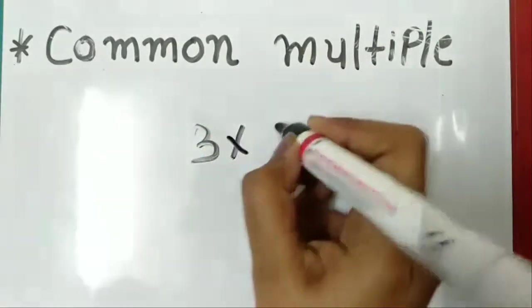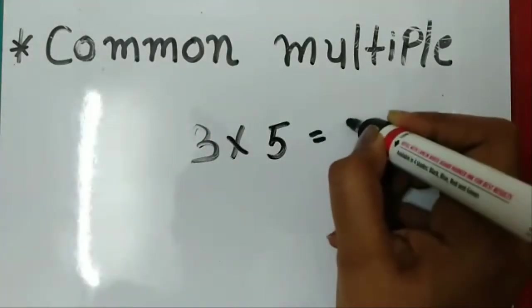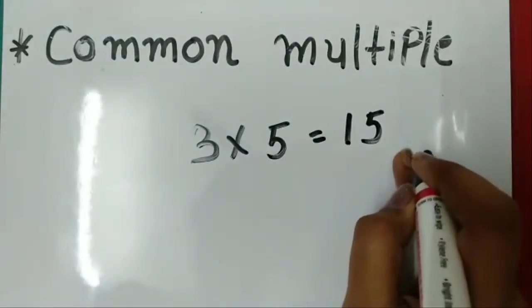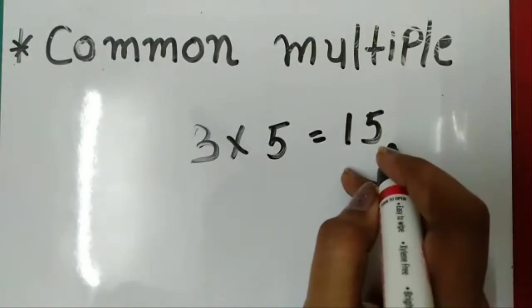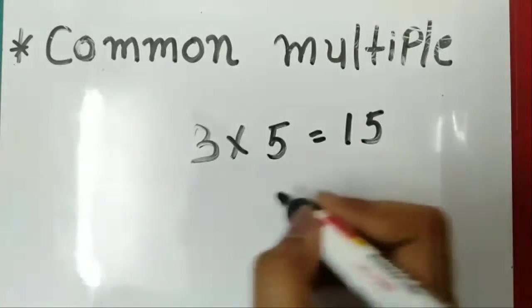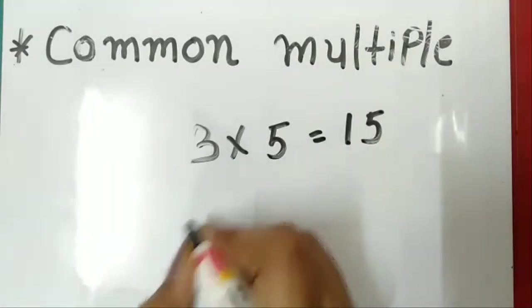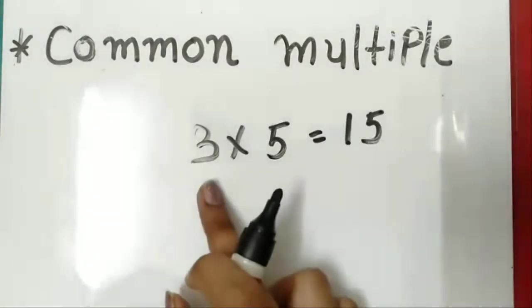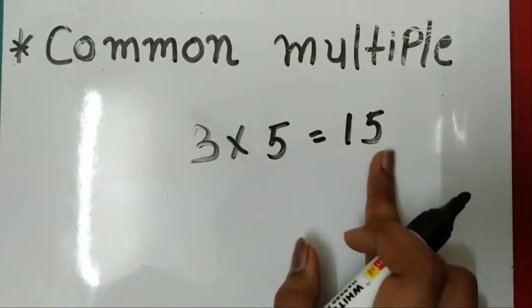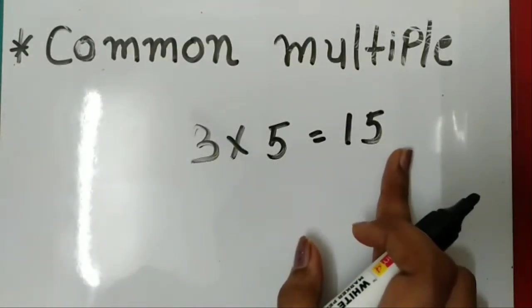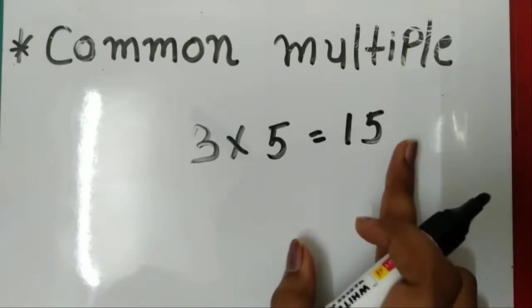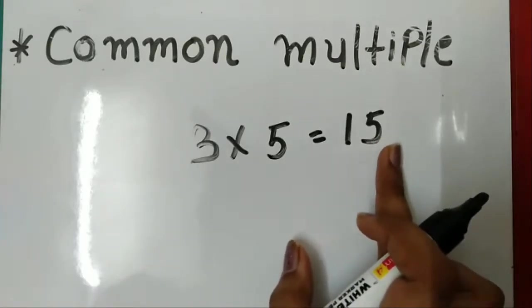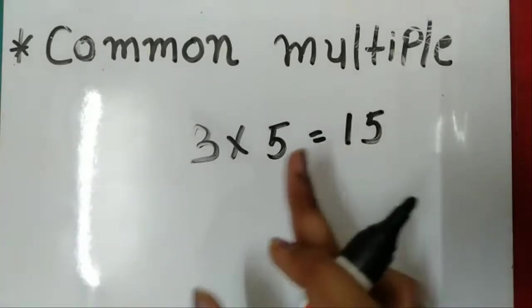See here: 3 × 5 = 15. 3 के table में भी 15 आता है, 5 के table में भी 15 आता है। So 15 is a common multiple of 3 and 5.